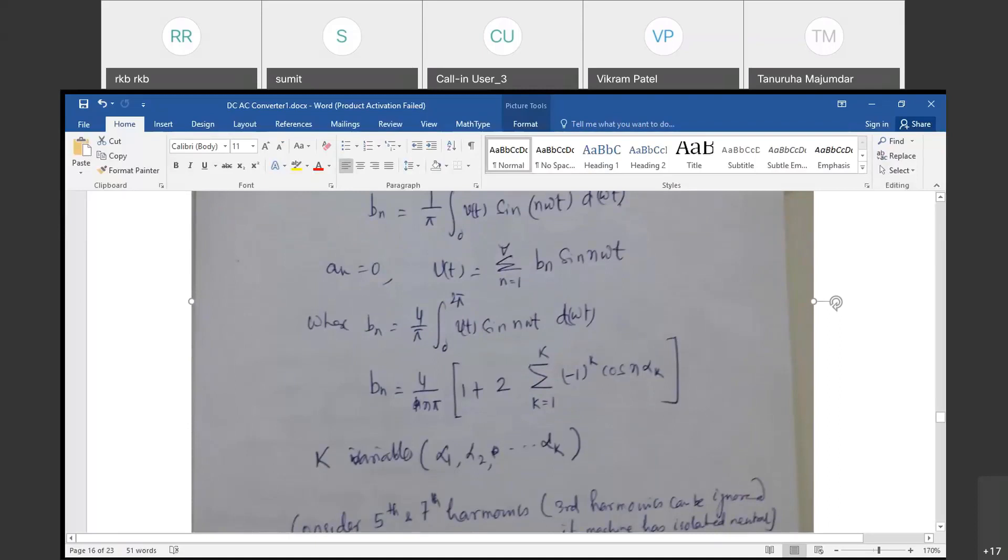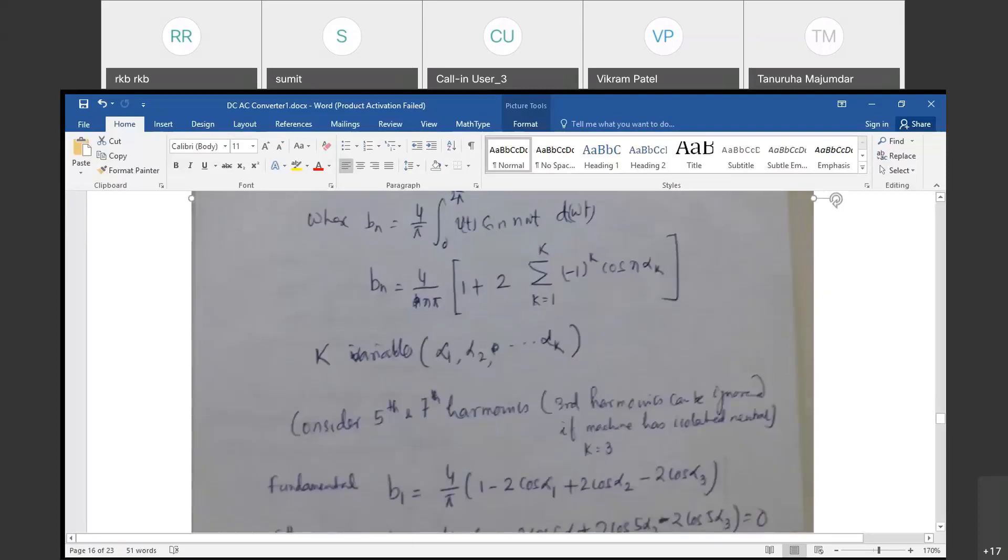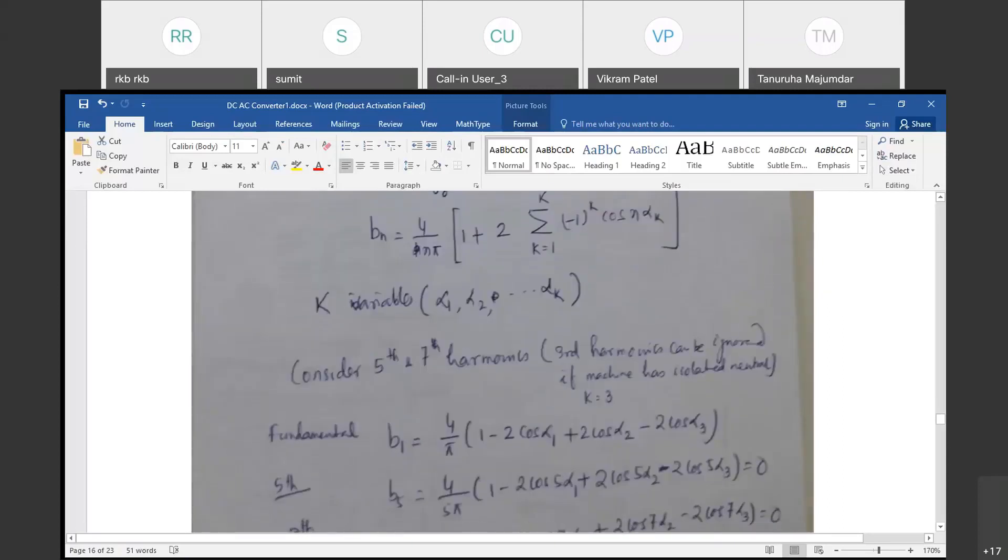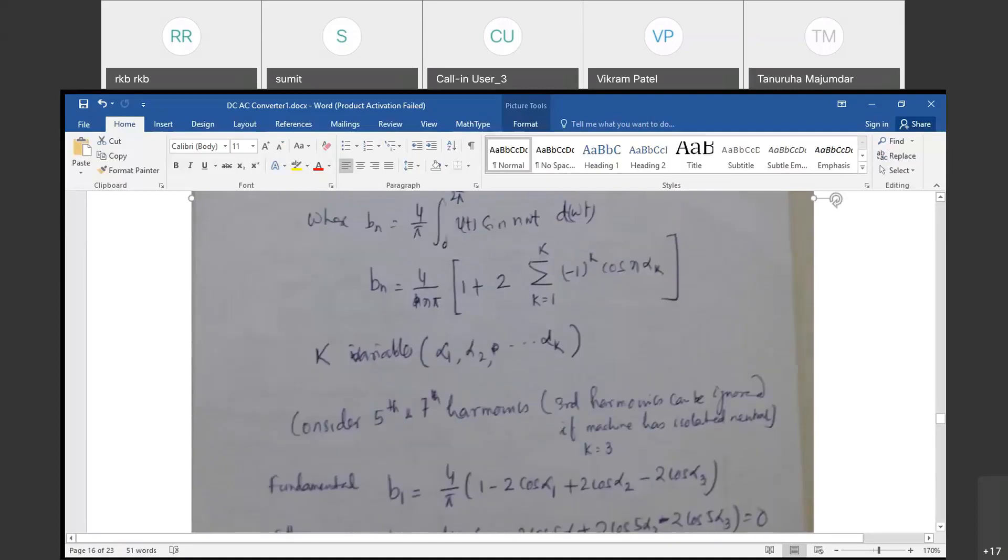And we get that the Bn is some kind of this equation. An is equal to 0. So Vt is N equals 1 to infinity, Bn sin nωt. You have to consider k variables means the k number of the variables, α1, α2, α3, number of k.